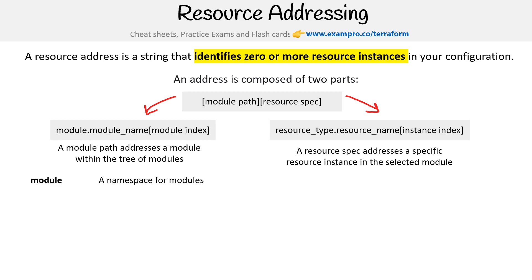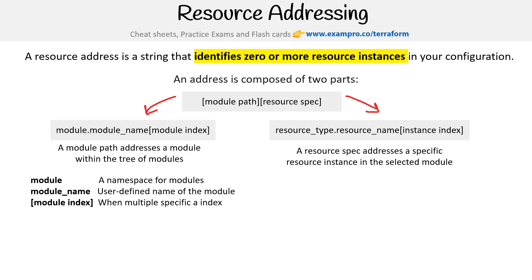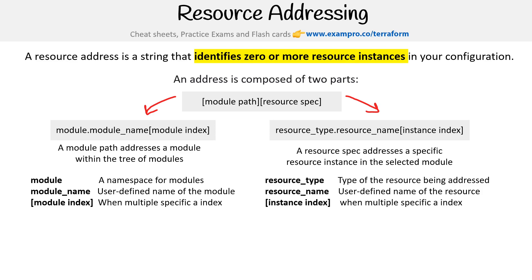A module is the namespace of the module. Module name is the user-defined name of the module, and module index is used when there are multiple instances. On the resource spec side, that's your resource type, your resource name, and instance ID.